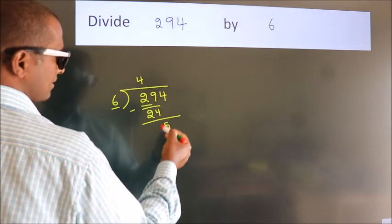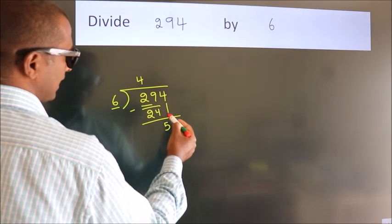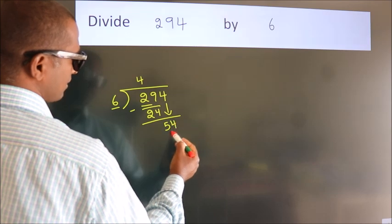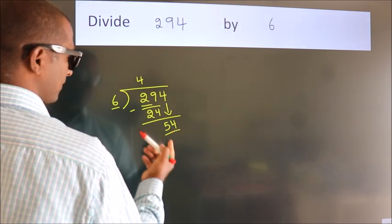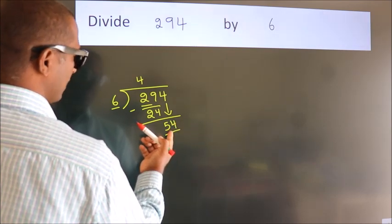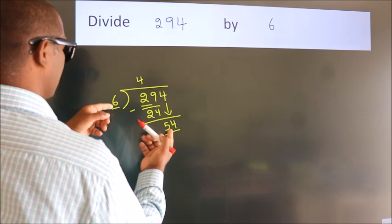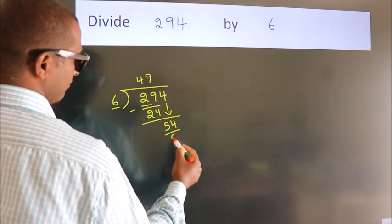Now, after this, bring down the next number. So, 4 down. So, 54. When do we get 54? In the 6 table, 6 nines is 54.